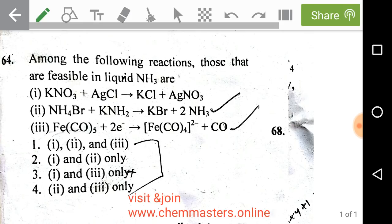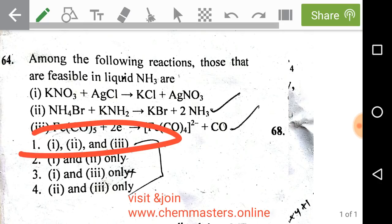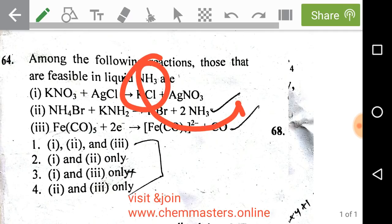The third one involves iron pentacarbonyl. Reduction of transition metal complexes is very common in liquid ammonia in the presence of metals like sodium. Whenever those metals are present, reduction of organometallic transition metal carbonyls is common, and this reaction is also possible in liquid ammonia. So the first option — where all reactions are possible in liquid ammonia — is correct. Liquid ammonia is a non-aqueous solvent that ionizes into NH2⁻ and NH4⁺.